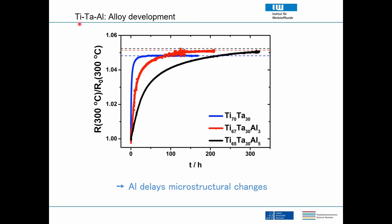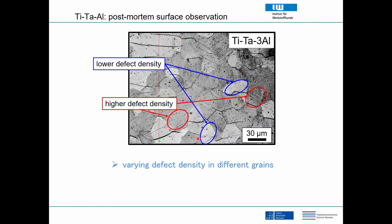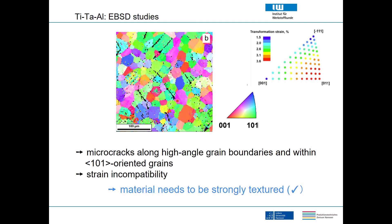One approach to address the omega phase problem is to use ternary alloys. We measured electrical resistance at 300 degrees C normalized by the initial value. For the binary material there is a rapid change in electrical resistance as the omega phase forms. When we alloyed with aluminum, this change is delayed. We also found that defect density is substantially different between grains — some grains have high defect density and others low.